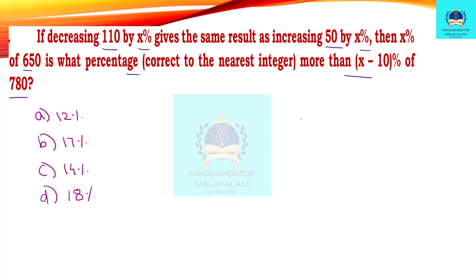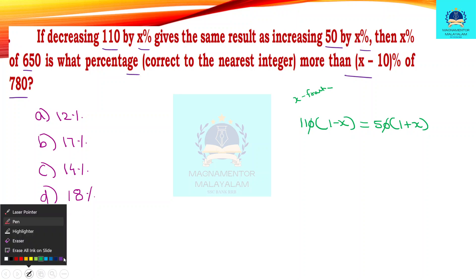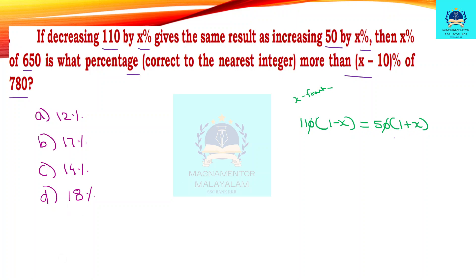Next question: decreasing 110 by x percentage. Express as 110 multiplied by (1 minus x). Decreasing equals the same result as increasing — so we write (1 plus x) for the increasing side. This gives us (1 plus x) by (1 minus x), which equals 1 by x.